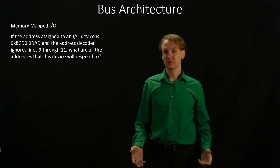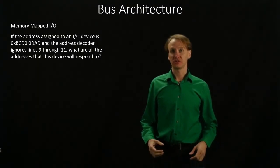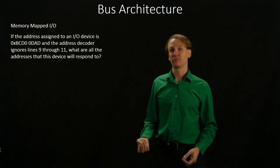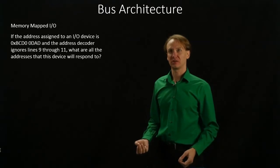This time we're going to be working with another device that also listens for the address bcdoodad, but this time it ignores three different bits. It's going to be ignoring bits 9 through 11.